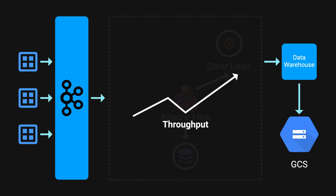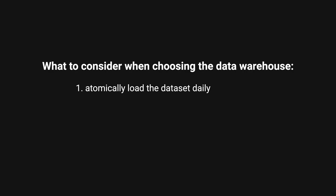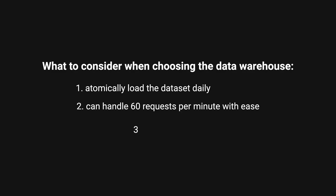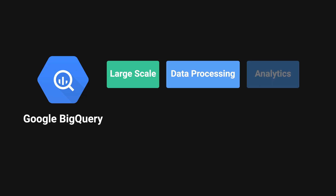This approach aims to boost the overall throughput of Apache Flink for their general release. When considering which data warehouse to use, it needed to meet three criteria: one, atomically load the data set daily; two, can handle 60 requests per minute with ease; three, can export the results to Google Cloud Storage. The data warehouse they ultimately chose was BigQuery, a platform specifically designed for large-scale data processing and analytics.